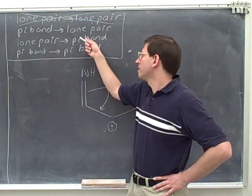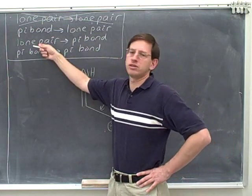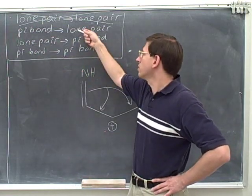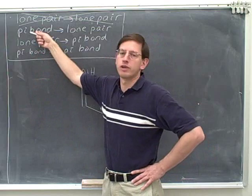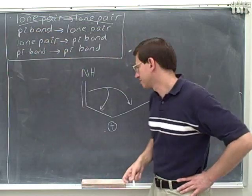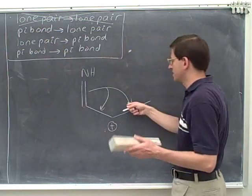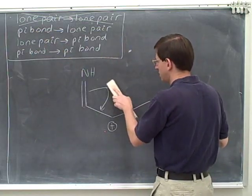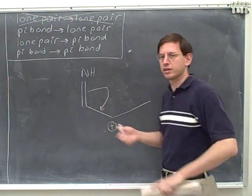Remember, the as close as possible rule means that you want to put the new pi bond as close as possible to the original pi bond, or you want to put the new pi bond as close as possible to the original lone pair, or you want to put the new lone pair as close as possible to the original pi bond. So this head is not as close as possible — this one is.